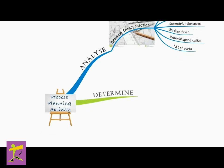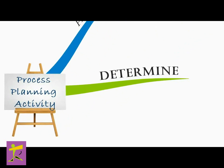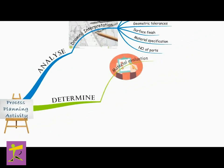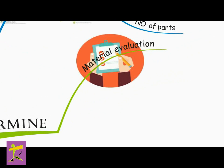The second step in process planning is material selection and evaluation, and process selection. The selection of a sound, economical material is another important aspect of process planning.